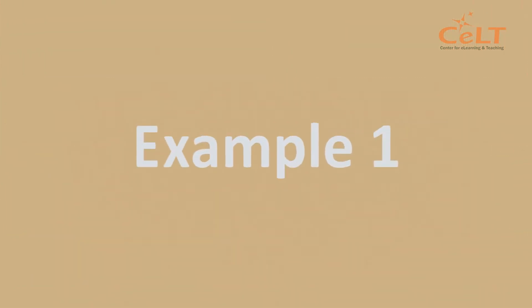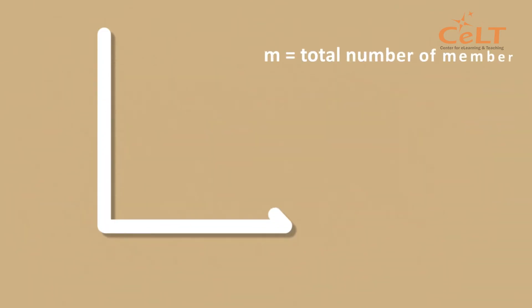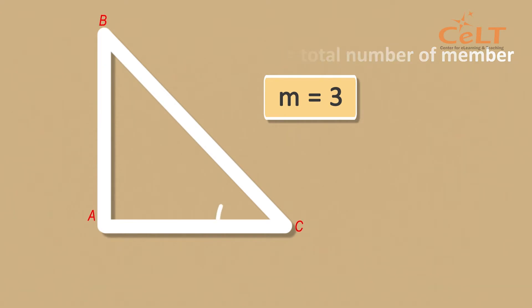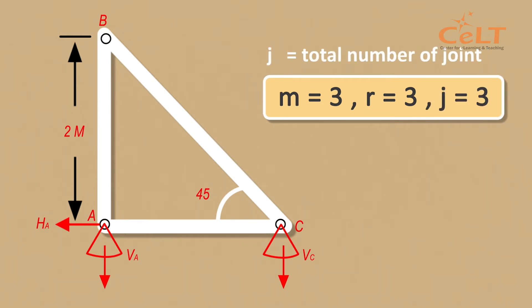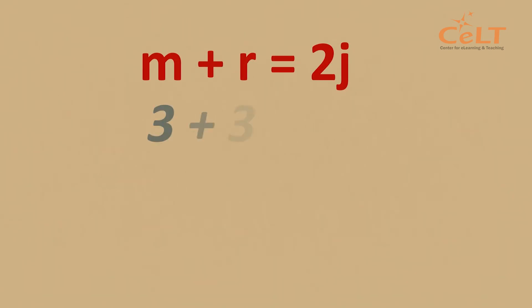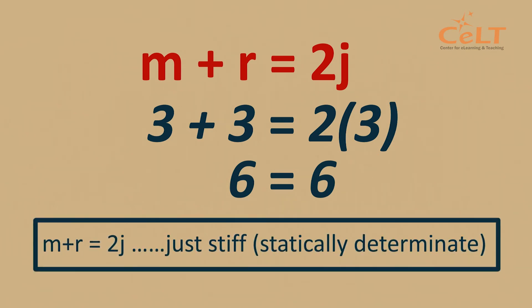Let's look at Example 1. Based on the diagram, determine whether the truss is statically determinate or statically indeterminate. From the diagram, we can see the total number of members is 3, total reactions equals 3, and total joints equals 3. Substituting into the formula M plus R equals 2J, we can see that M plus R indeed equals 2J. Therefore, the truss is just stiff, or statically determinate.